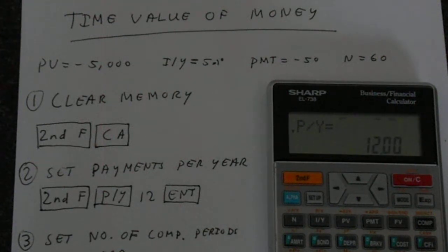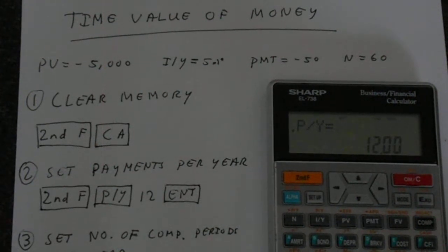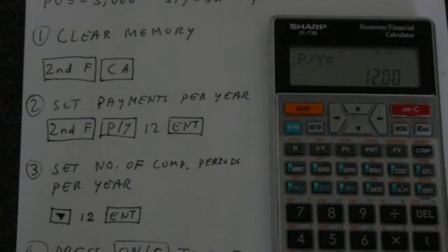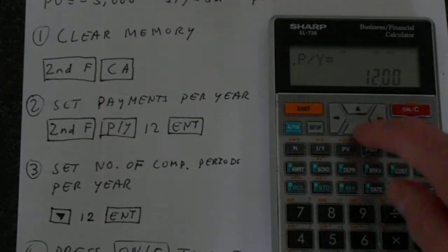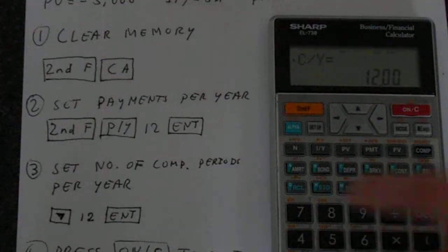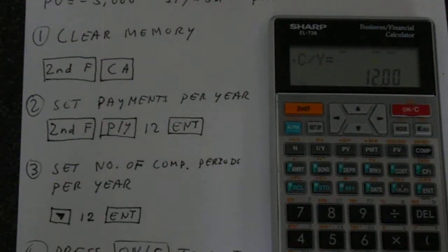We also need to set the number of compounding periods per year. So we've got 12 compounding periods. We see interest being paid each month. So just put in 12 and enter. I think it was already set to 12.